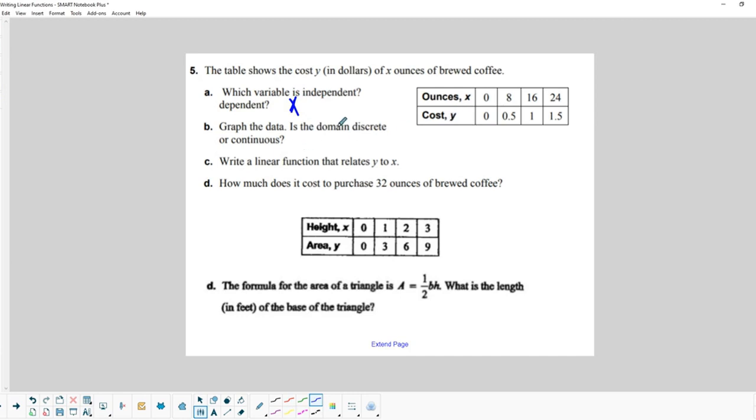So graph the data, okay, is the domain discrete or continuous? So if we put that on a graph, we would notice that you could buy incrementally smaller amounts than just a half ounce or one ounce unless the company is only going to give you 8 ounces or 16 ounces or 24 ounces. So it kind of depends on how you look at it. But if we just base it off of this table of values, we would say the domain is discrete.